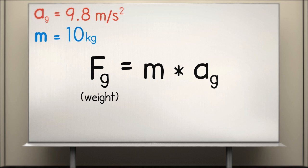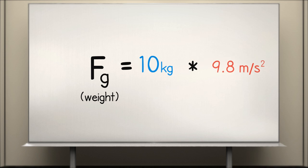For example, the weight of a 10 kilogram mass on Earth's surface is 10 kilograms multiplied by 9.8 meters per second squared, or 98 newtons.